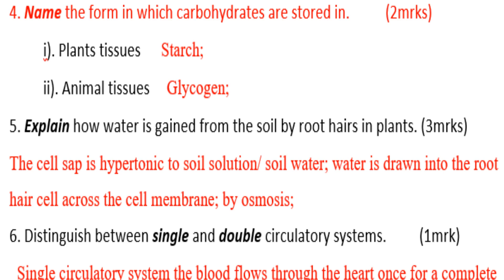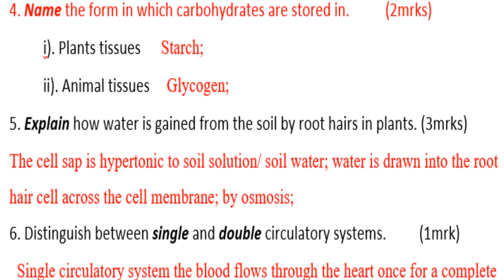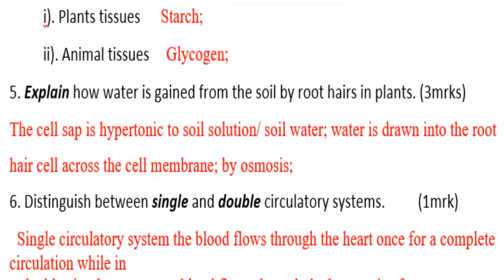Explain how water is gained from the soil by roots. In plants, the cell sap is hypertonic to the soil solution, so soil water is drawn into the root hair cells across the cell membrane by osmosis.